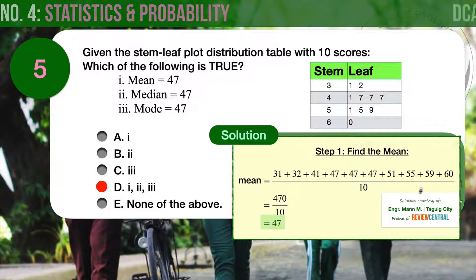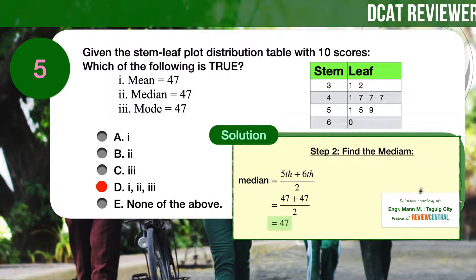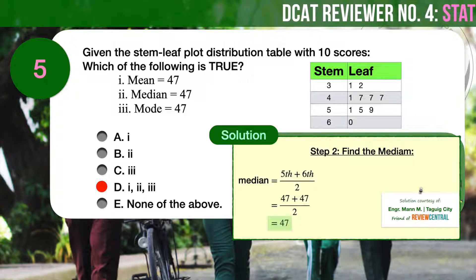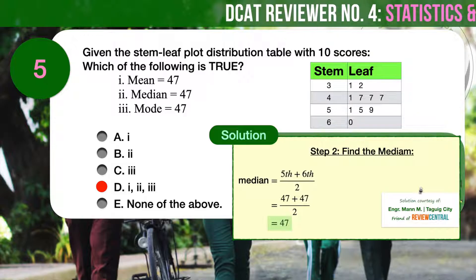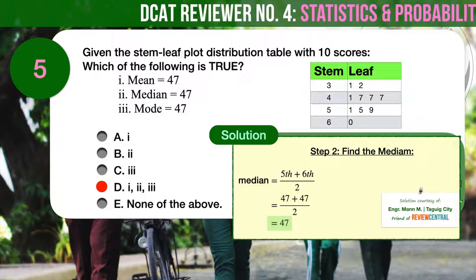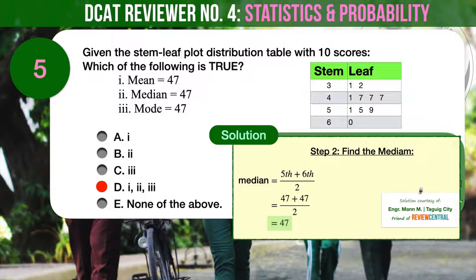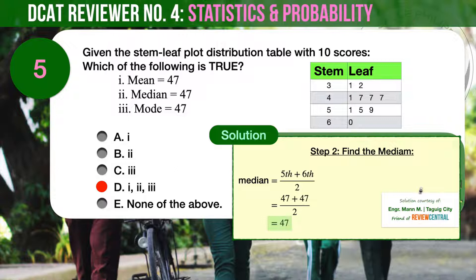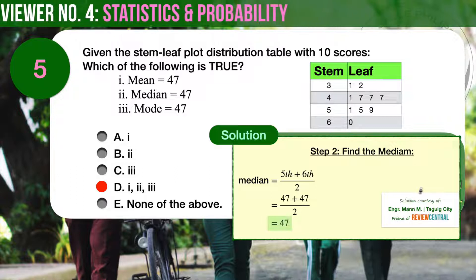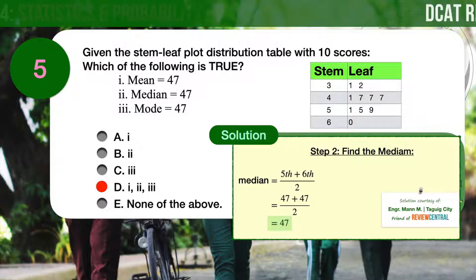Now let's find the mean. Mean is simply the mathematical average of the numbers in the given set. Computing for the mean, we should arrive at 47 as the answer. Therefore, 1 is true. Next, let's find the median. The median is the middle value when a data set is ordered from least to greatest. Since there are 10 scores, we find the median by taking the average of the fifth and sixth scores. We should arrive at 47 as the median. Therefore, 2 is also true.